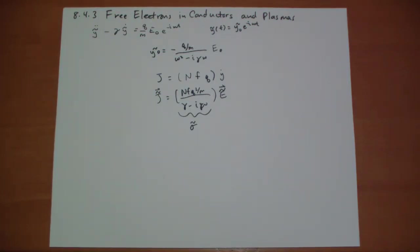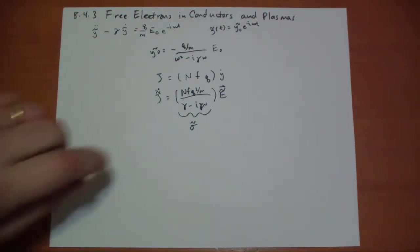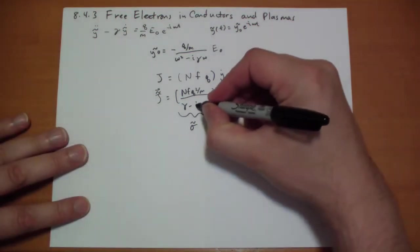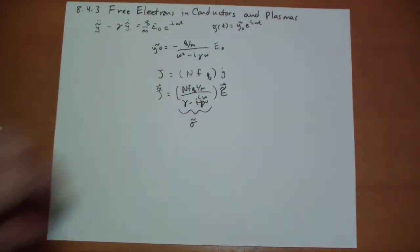At low frequencies, when this number at the bottom is very small, it's not i gamma, it's i omega. When the frequency is very small, then we have a real term, it behaves like the conductors that we've always talked about up to this point. But when the frequencies get higher and higher, this term begins to dominate and it becomes more and more imaginary at a high frequency.